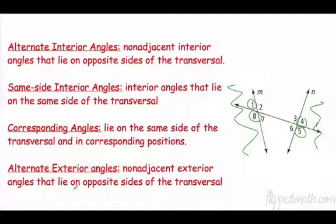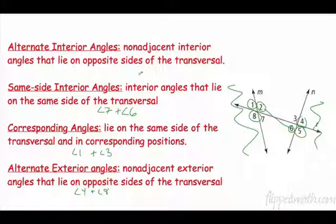Let's look at the last one. Alternate exterior angles, non-adjacent, so they can't be next to each other. Exterior angles that lie on opposite sides. So these are all exterior, so they've got to be on the outside. So four, five, one, and eight, those are the ones we're talking about. Let's look at number one. If one's on the top side, it has to be on the opposite side, so the opposite side would be five because it cannot be adjacent. Remember, adjacent's right next to it. So one and five would be alternate exterior angles. Four and eight would be alternate exterior angles.